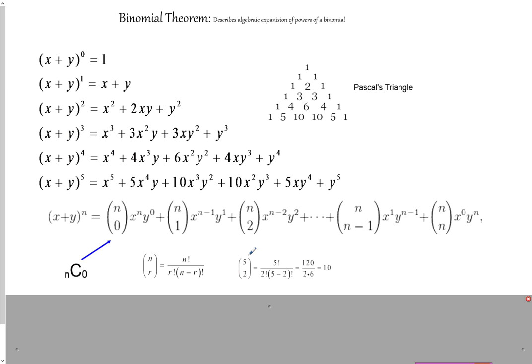Now this term, this 5C2, is the same as this 10 here that we get. This 10 comes from the 5C2 because this is the 5C2 term. This is the 5C0, 5C1, and this is the 5C2 term.